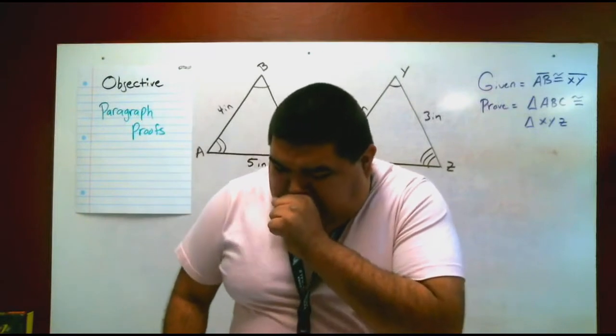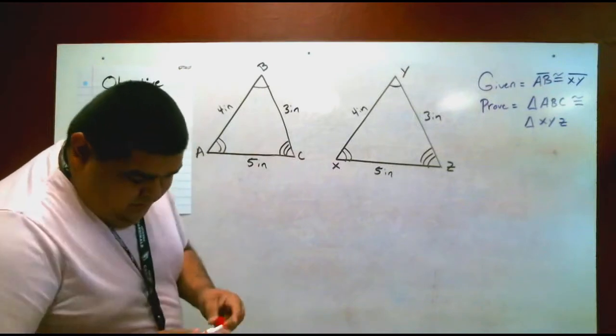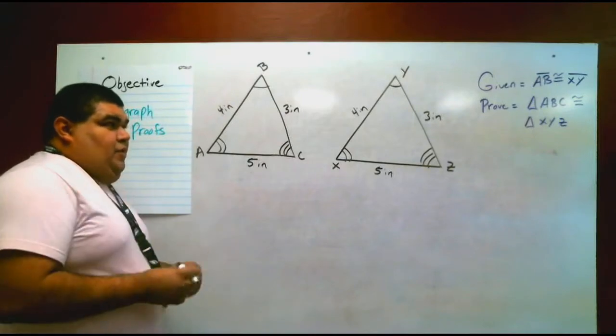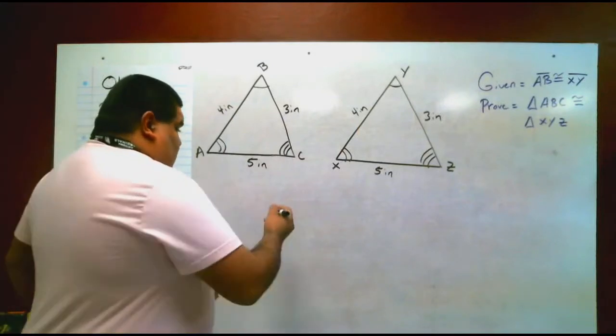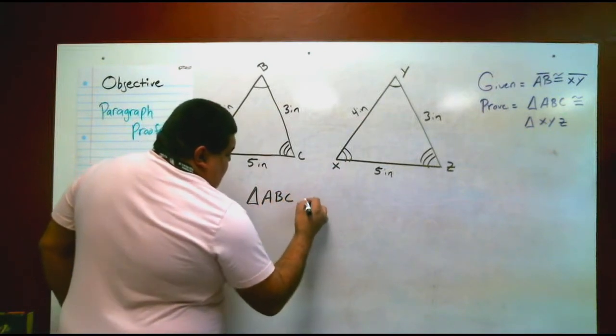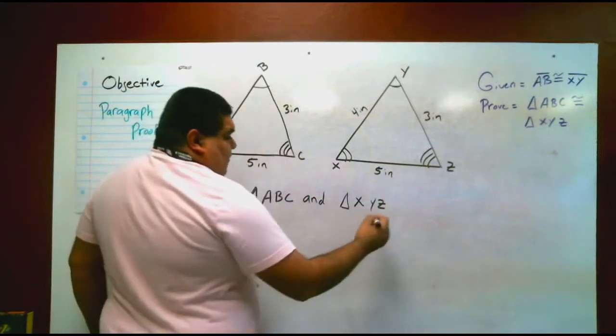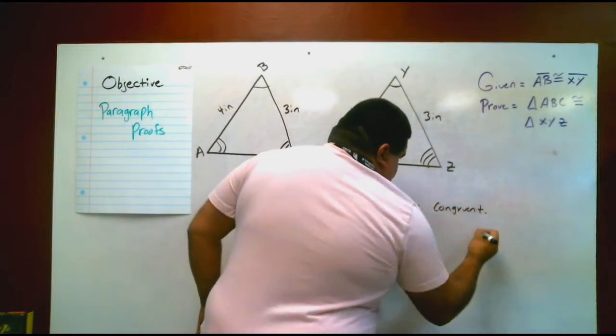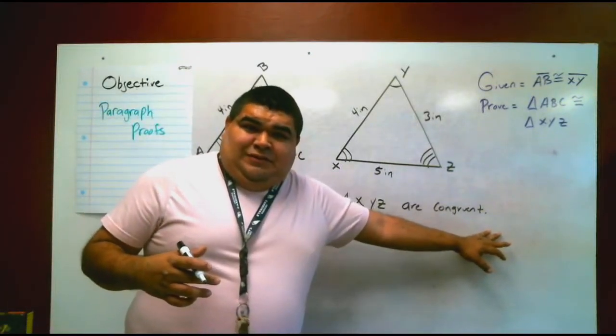We're going to do it in paragraph proof. That's the objective today, know how to write them. So we know that it is given that AB and XY are the same, so we can start off by saying triangle ABC and triangle XYZ are congruent. That's our first statement, our first sentence.